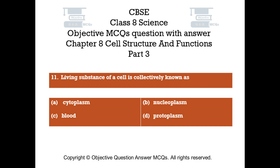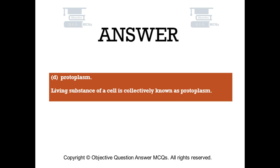Question number 11: Living substance of a cell is collectively known as — Option A: Cytoplasm, Option B: Nucleoplasm, Option C: Blood, Option D: Protoplasm. The right answer is Option D: Protoplasm. Living substance of a cell is collectively known as protoplasm.